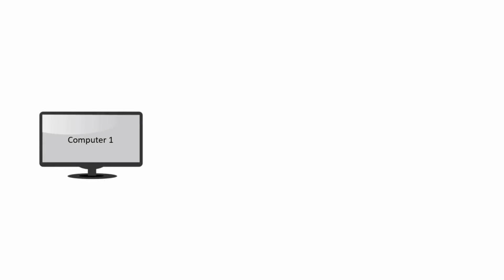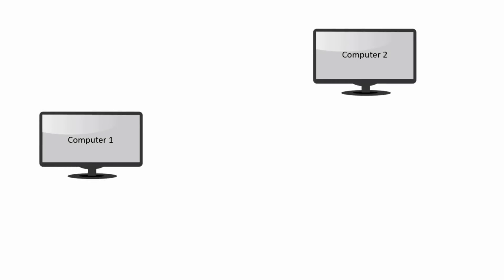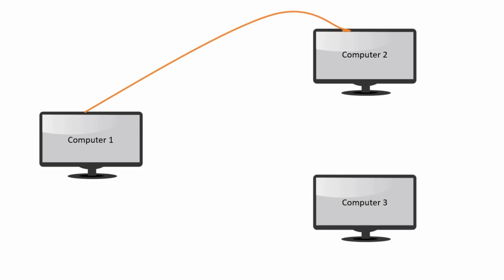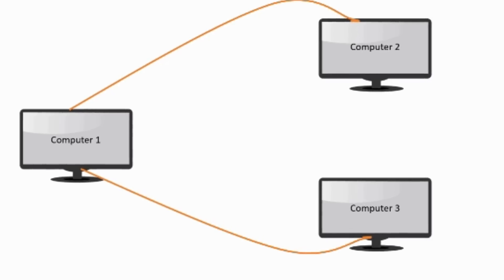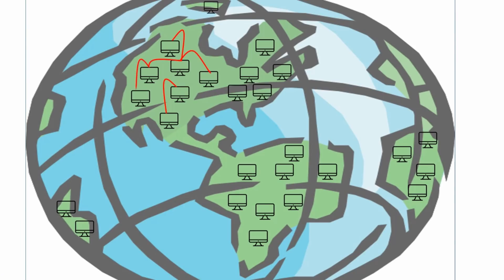So what exactly is internet? Internet is a computer network. A computer network is basically something that connects computers. Computer one can connect to computer two, either through a cable wire or through a wireless mechanism. Computer three can connect with computer two through computer one. This makes a small computer network with three computers. Internet is one of the largest computer networks that exists on earth because it connects computers globally.